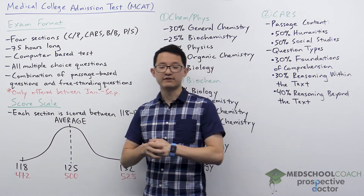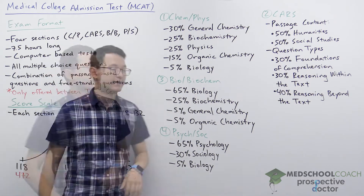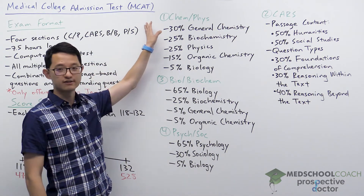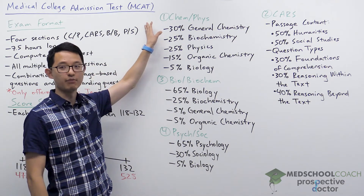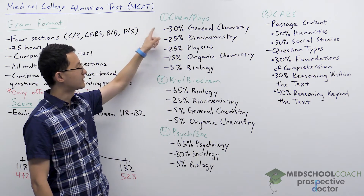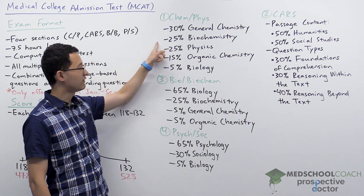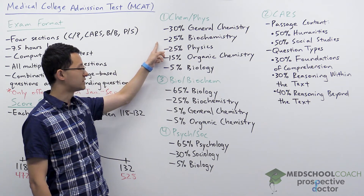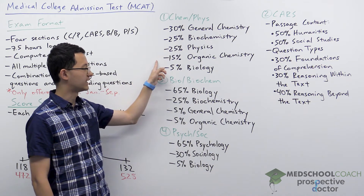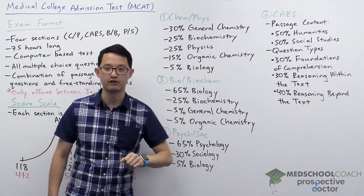Let's look at each of the four sections of the exam in more detail. The first section is the chemical and physical foundations of biological systems. This section is 30% general chemistry, 25% biochemistry, 25% physics, 15% organic chemistry, and 5% biology.